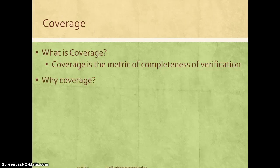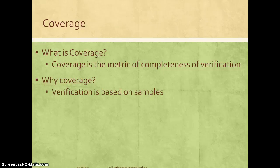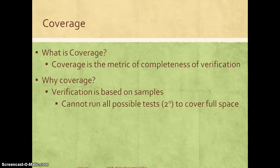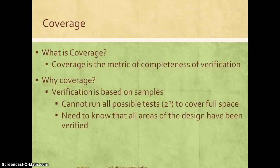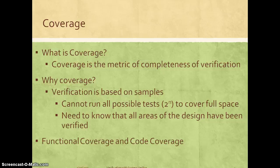Coverage is defined as a metric for completeness of verification. In constrained random verification, which is most commonly used for complex designs, we don't verify the complete state space — we verify based on samples. With n states, you cannot run all 2^n combinations to cover the entire verification space. We follow a constrained random approach with tests around interesting scenarios, and use functional coverage and code coverage to identify what areas of the design are being verified.